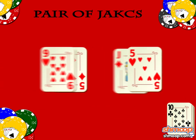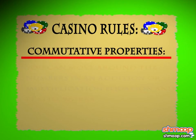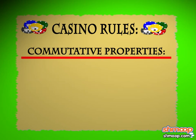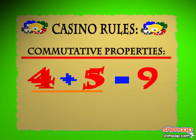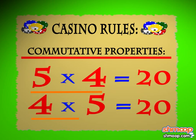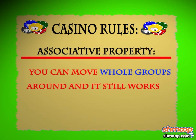Just like a pair of jacks is a pair no matter what order you have the cards in, commutative properties means you can move around the numbers in an addition or multiplication equation and it still works. For example, 4 plus 5 is the same as 5 plus 4. The same with 5 times 4 or 4 times 5.